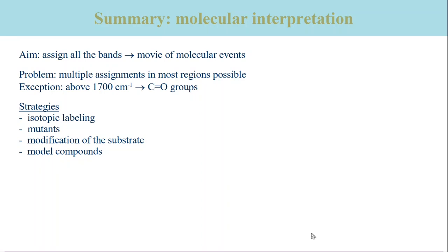We discussed various strategies for isotopic labeling, the use of mutants as in the example of bacteriorhodopsin, and modifying the substrate as used for the fingerprint approach. In spite of the simplicity of the fingerprint approach, it can give molecular information.